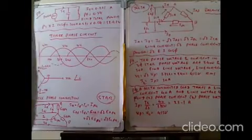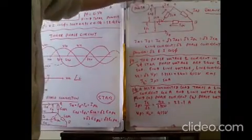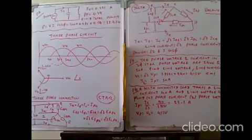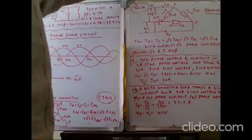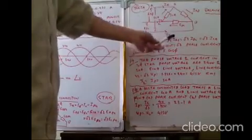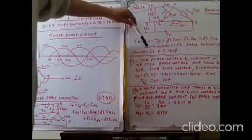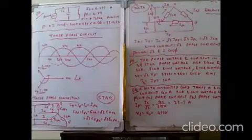For the delta connection: IAB, IBC, ICA are phase currents; IA, IB, IC are line currents. In delta, phase voltage and line voltage are the same. Line currents: IA = √3 × IAB, IB = √3 × IBC, IC = √3 × ICA. So line current is √3 times the phase current. Power P = √3 × E × I × cos φ.